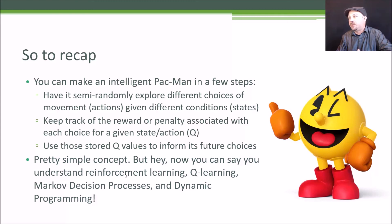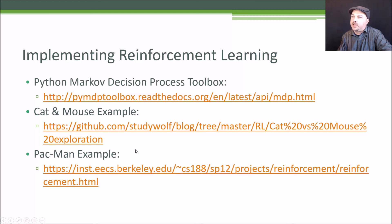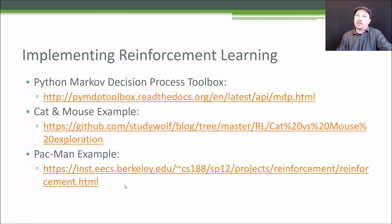It's pretty cool that you can make an artificially intelligent Pac-Man through such a simple technique, and it really does work. There's a Python Markov decision process toolbox that wraps it in all that terminology, a working example of the cat and mouse game, and a Pac-Man example you can look at online. More generally, reinforcement learning is useful for building an agent that navigates through different states with associated actions. Whenever you have a situation where you need to predict behavior given current conditions and possible actions, reinforcement learning and Q-learning might be the right approach.